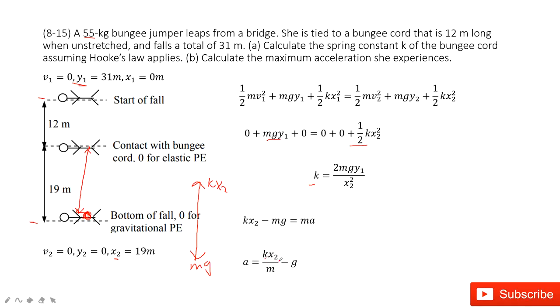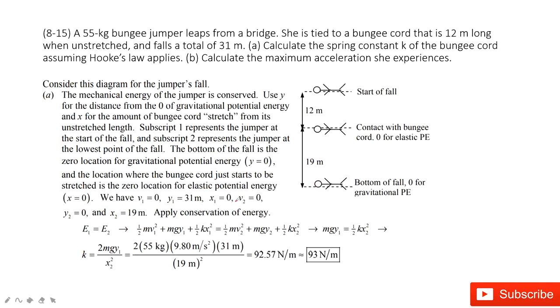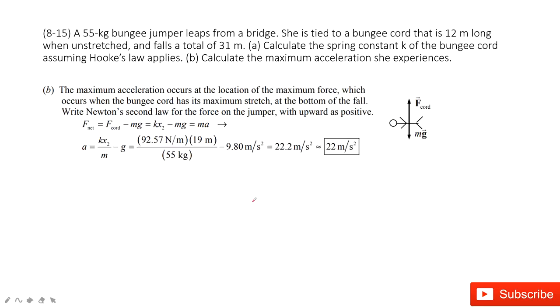We can see k is known, x2 is given, mass is given, g is constant. Then you can find a. Now we can input the known quantities. We find k is around 93 newtons per meter, and the acceleration is around 22 meters per second squared.